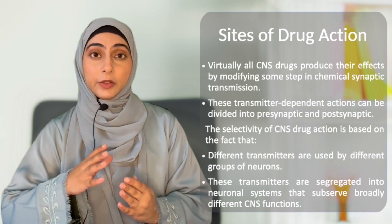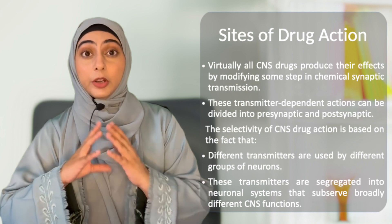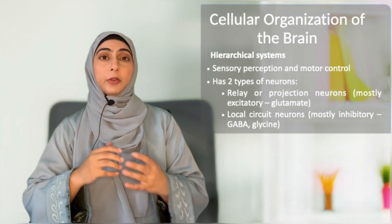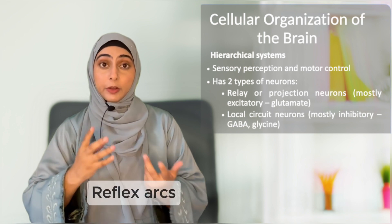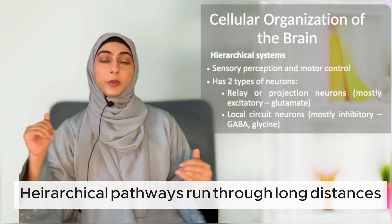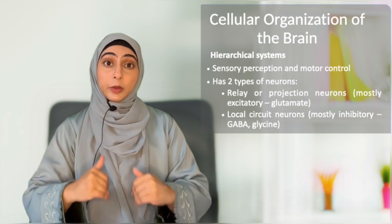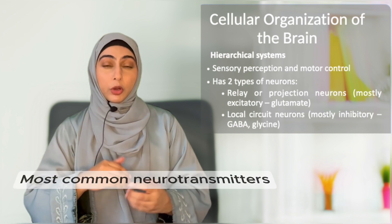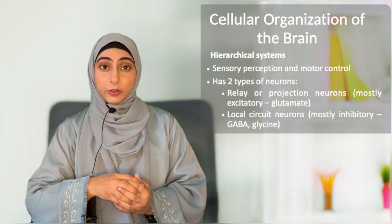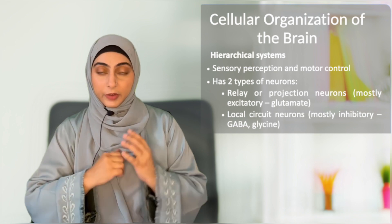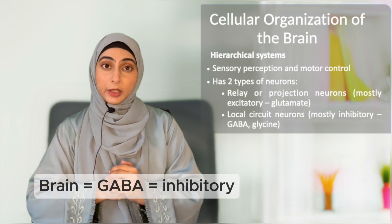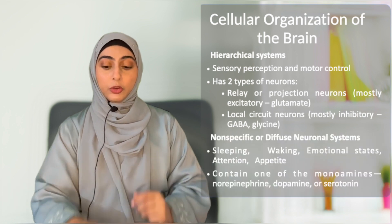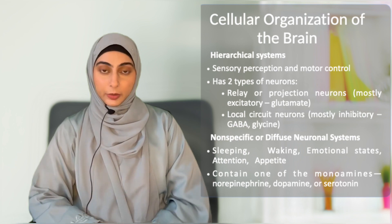Structurally, there are certain pathways which are hierarchical and certain pathways which are diffuse. In hierarchical pathways, there is a defined sequence — for example, our sensory control, motor control, and reflex arcs. These hierarchical pathways run long distances, carrying signals from the periphery to the brain and back in a sequence or hierarchy. The most common neurotransmitters in hierarchical pathways are excitatory, such as glutamate, and inhibitory, such as GABA and glycine. In the brain, GABA is the predominant inhibitory neurotransmitter, while in the spinal cord, glycine is predominant.